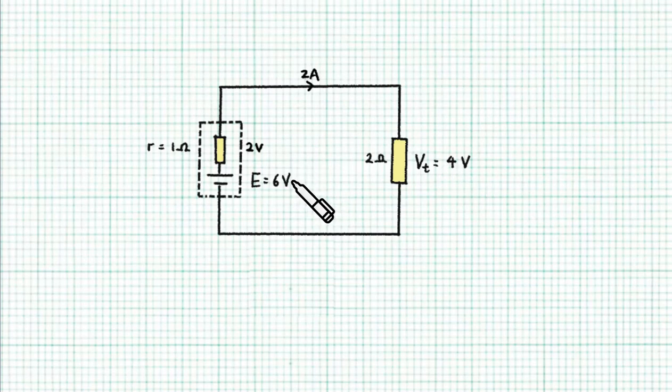So 6 volts is called the EMF of the battery and the 4 volts is called the terminal potential difference because it's the voltage that we obtain between the terminals of this battery and it's the voltage that's available to the external circuit.